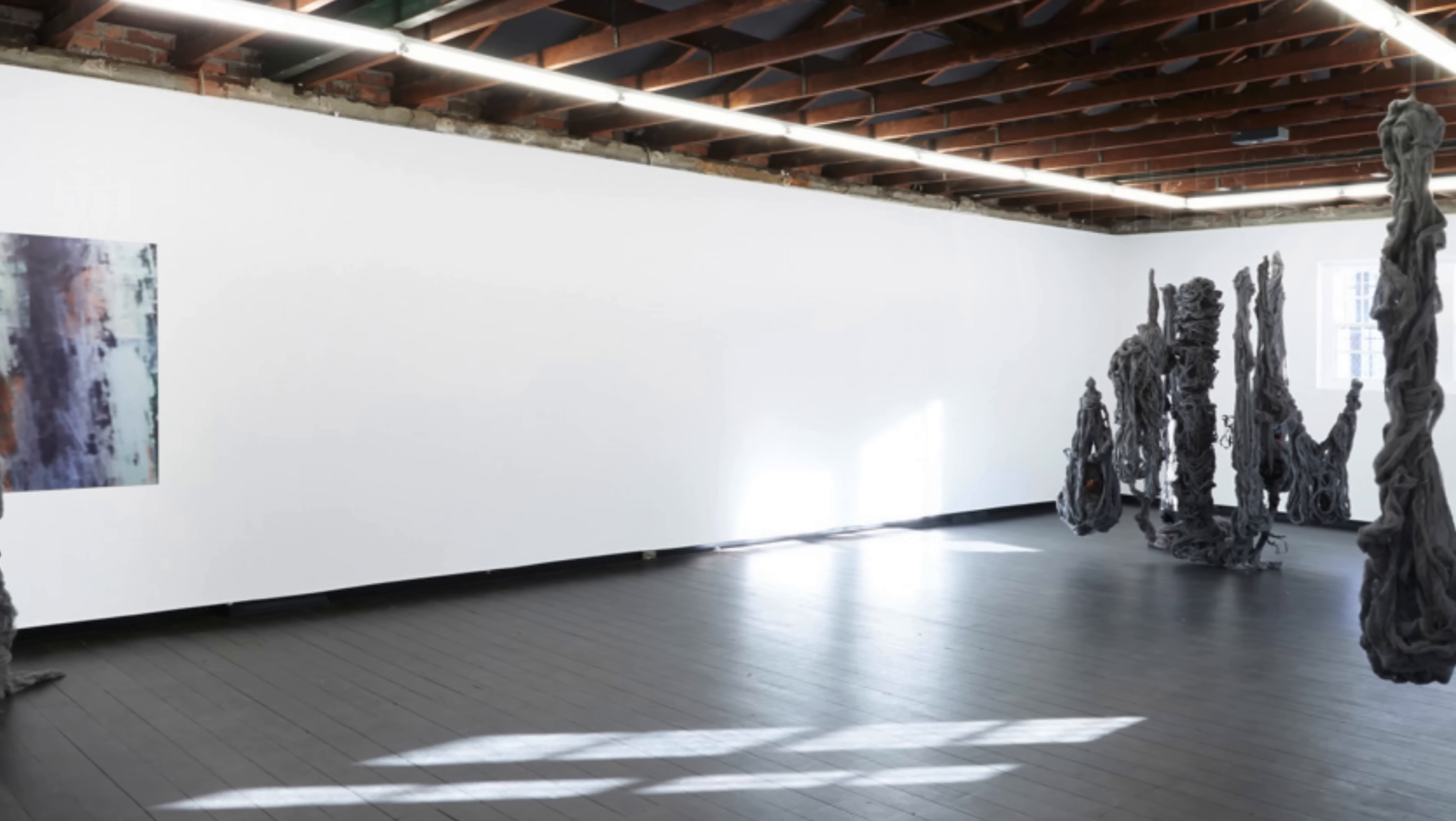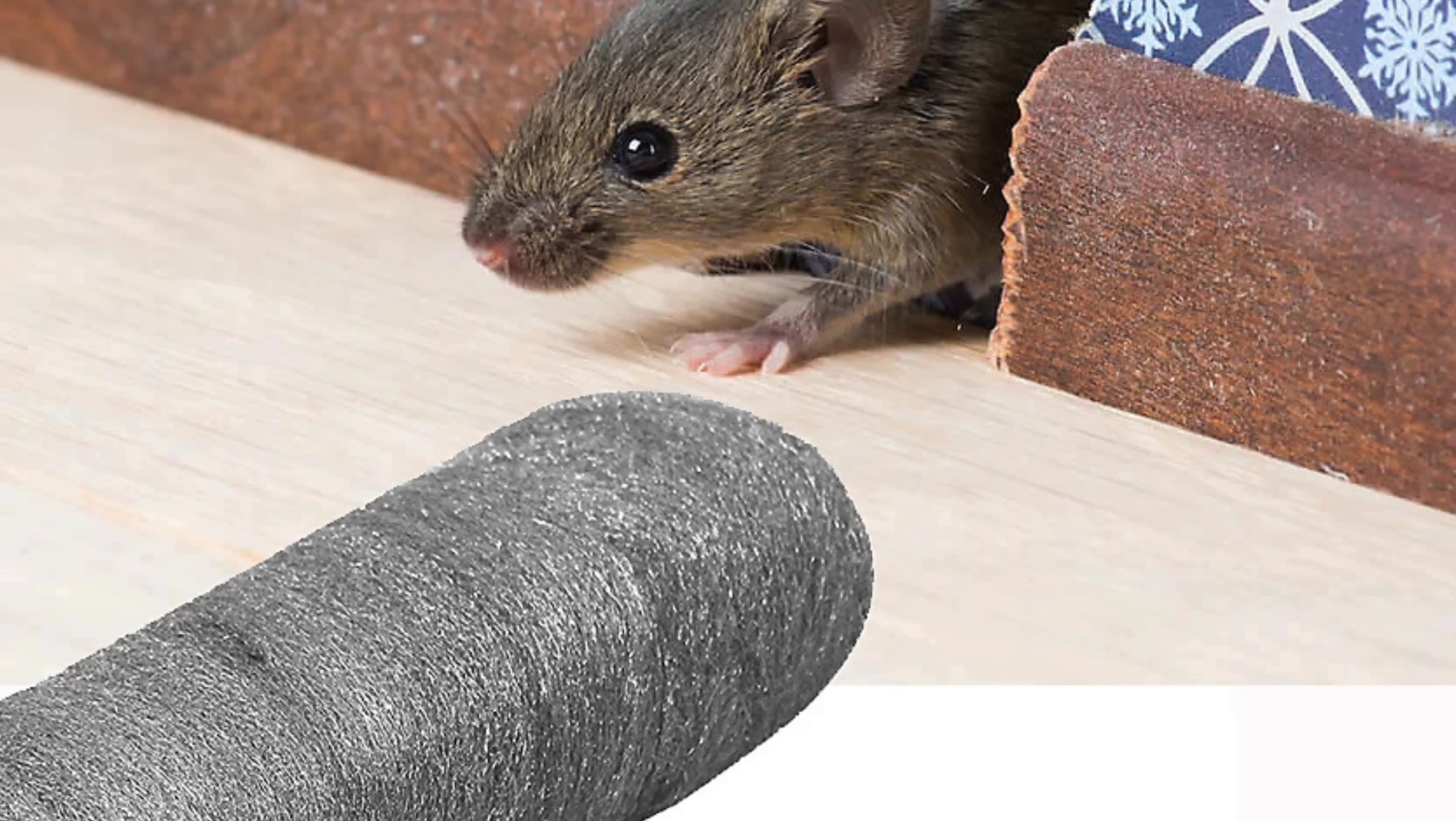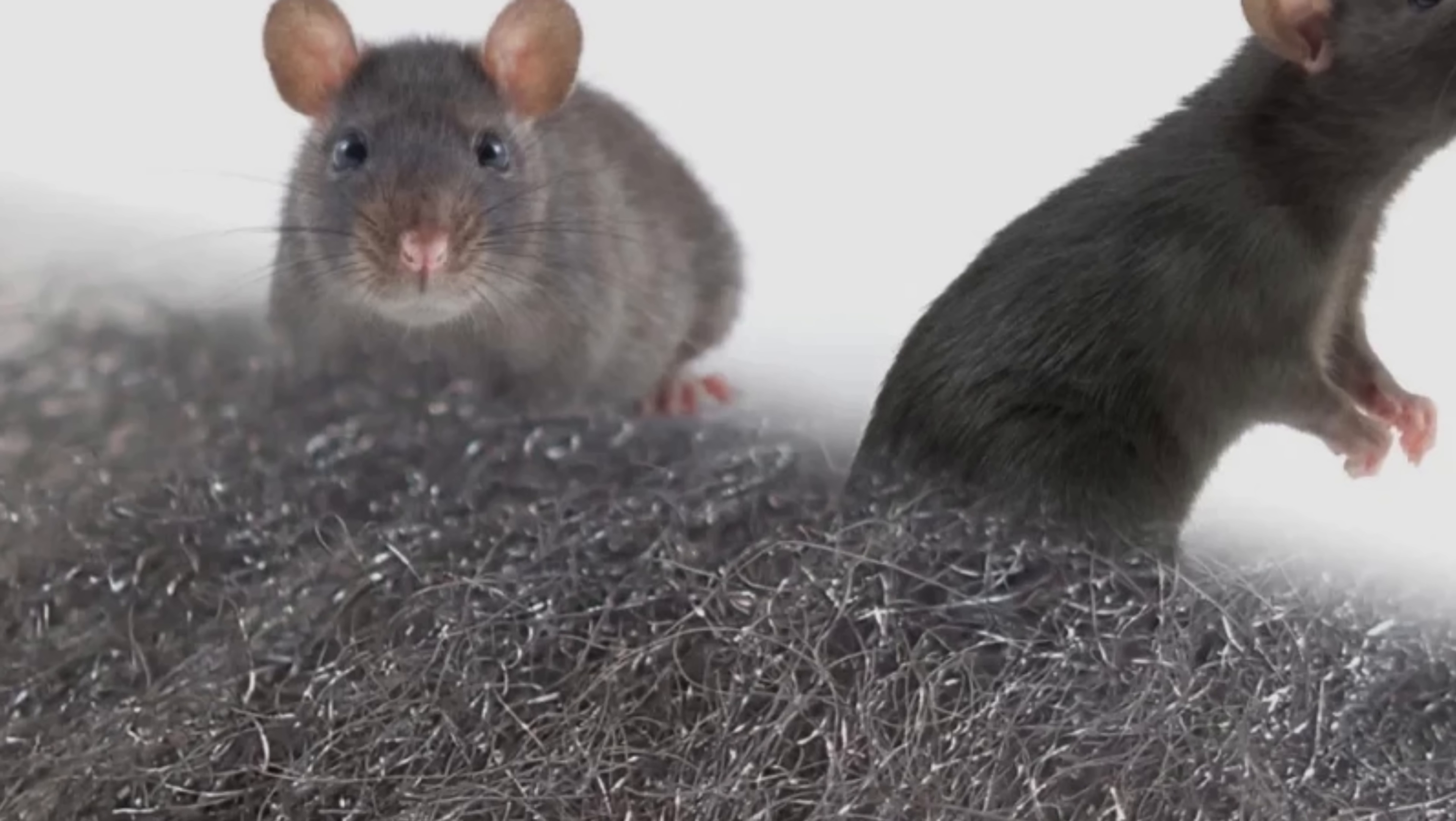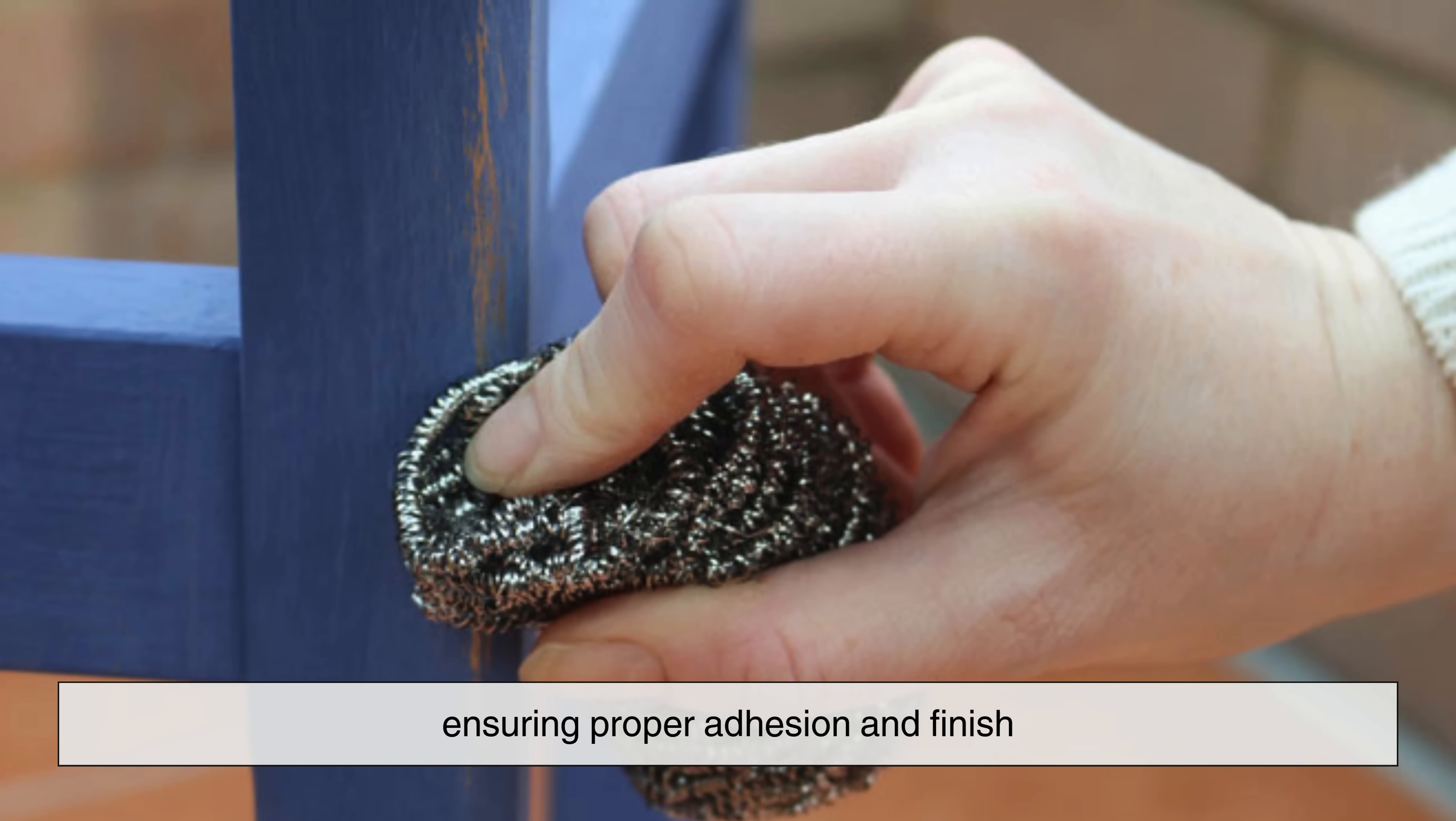Its applications stretch far beyond the kitchen sink. Artists use it in sculpture. Photographers wield it to create hypnotic long exposure shots of flying sparks. It even finds use in pest control, stuffed into small holes to prevent rodents from chewing through. The steel wool doesn't kill, but its abrasive texture is intolerable to tiny teeth and claws. And in metallurgy and surface engineering, fine-grade steel wool is used to buff, clean, and prepare surfaces for coatings, ensuring proper adhesion and finish.